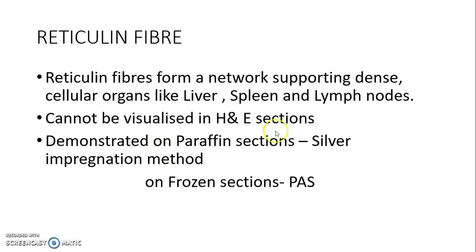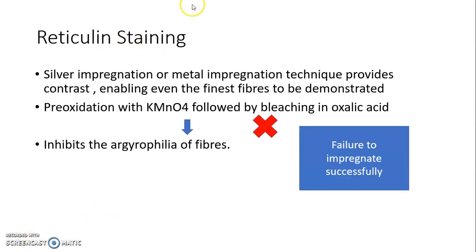They are demonstrated on paraffin sections by silver impregnation method, and on frozen sections by periodic acid-Schiff method. Before the staining procedure, we will discuss some important points. Silver impregnation or metal impregnation technique provides contrast enabling even the finest fibers to be demonstrated.